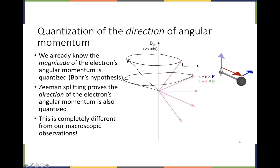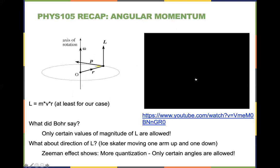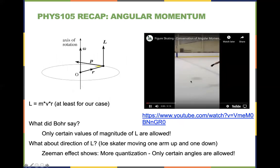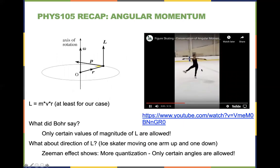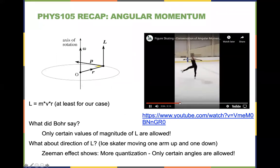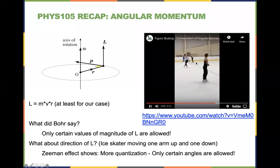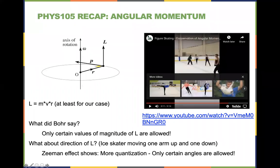There's one more question here — someone spilled on their keyboard, sorry about that. Quantization of angular momentum is something you would never see in everyday life — we only see it in physics experiments. Here's a video of an ice dancer showing conservation of angular momentum from Physics 105: she initially spins slowly with arms stretched out, but as she pulls her arms in she spins faster and faster.